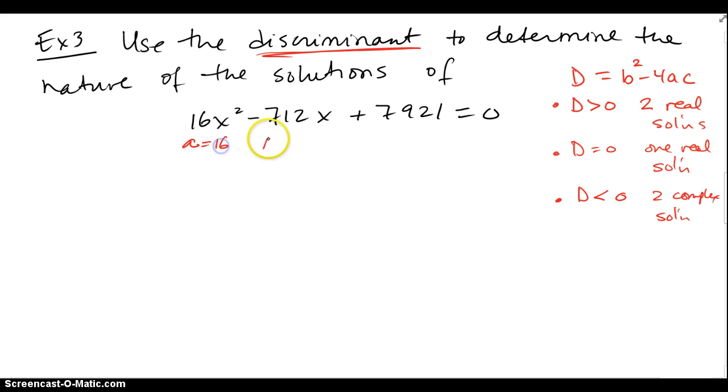So I've got to have my a, which is 16, my b, which is negative 712, so you're going to need your calculators of course, and c, which is 7921. And again, all I really care about is the discriminant.